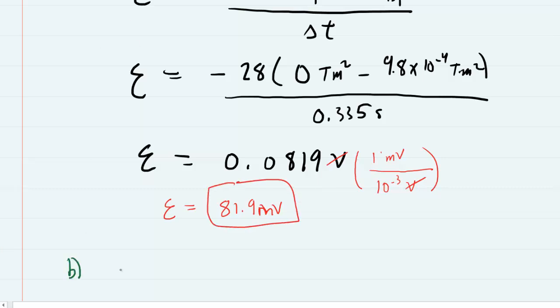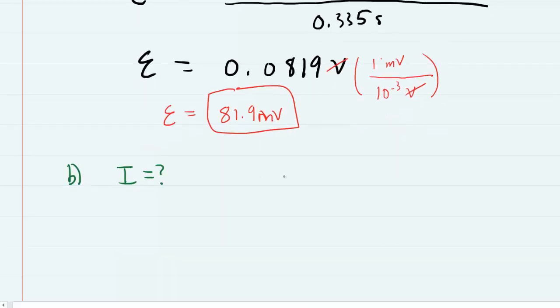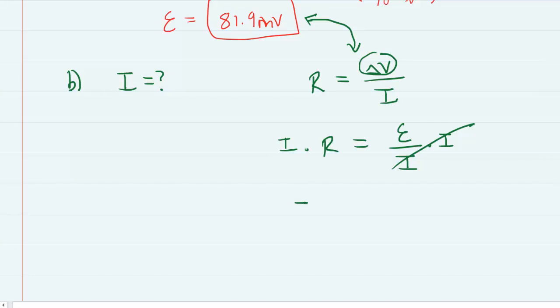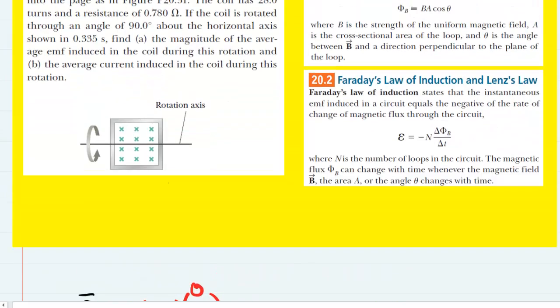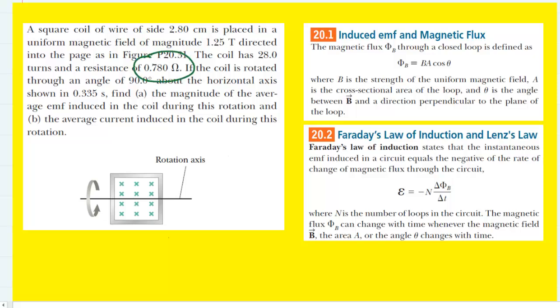In part B, we were asked for the current. We can recall that current is related to the EMF and resistance by Ohm's law. We recall that resistance equals potential difference divided by current. In this case, the potential difference is this induced EMF. So we can rewrite Ohm's law as R equals induced EMF divided by current. We'll solve the equation for current by multiplying both sides by I, so IR equals induced EMF. Then divide both sides by resistance. The current equals the induced EMF divided by the resistance. We have the induced EMF and the resistance, which is 0.78 Ohms.